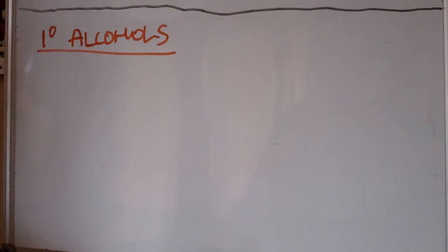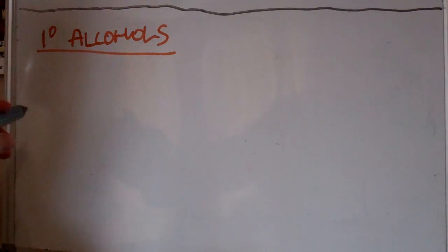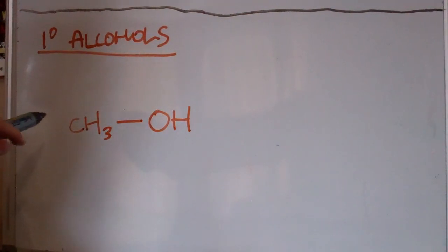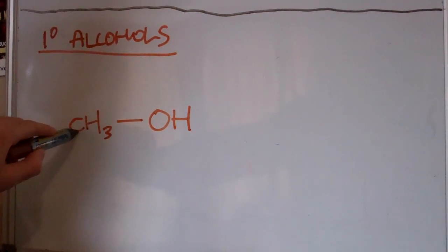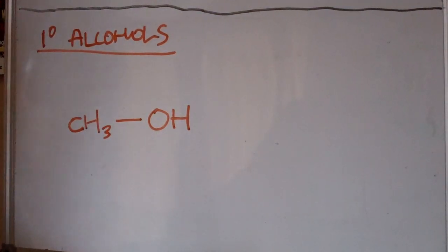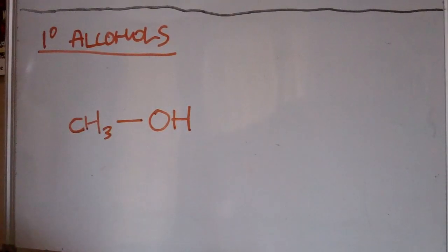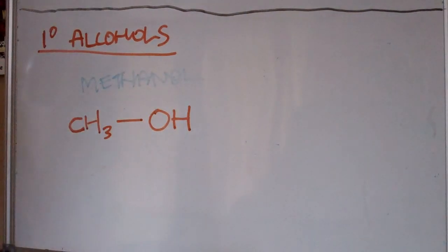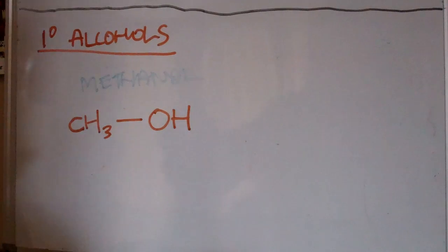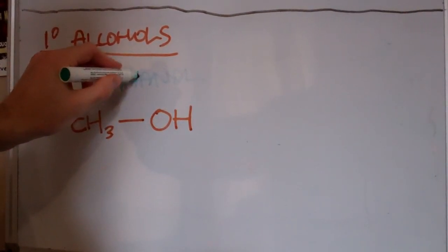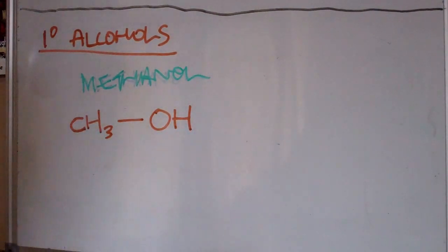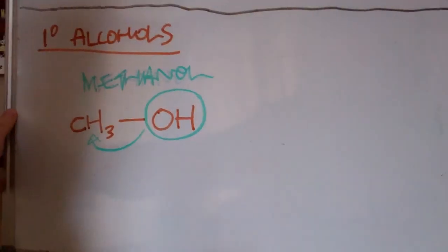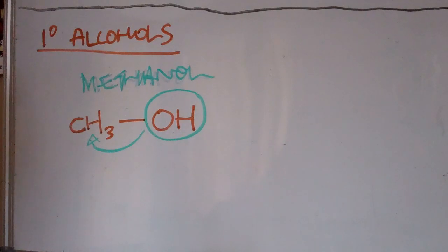The first type of alcohols we're going to look at are the primary alcohols. Primary alcohols have their hydroxyl group attached to a carbon that is attached to either zero or one alkyl groups. So here we've got CH3OH — this is methanol. The hydroxyl group is here, and it's attached to a single carbon. So this is a primary alcohol.